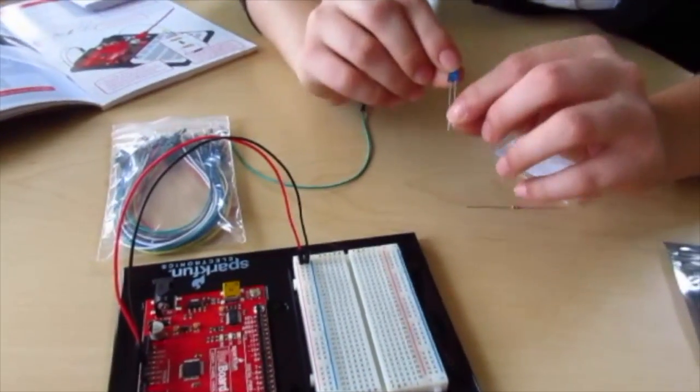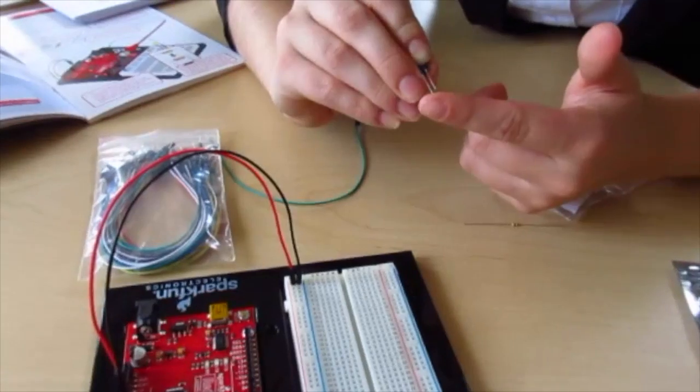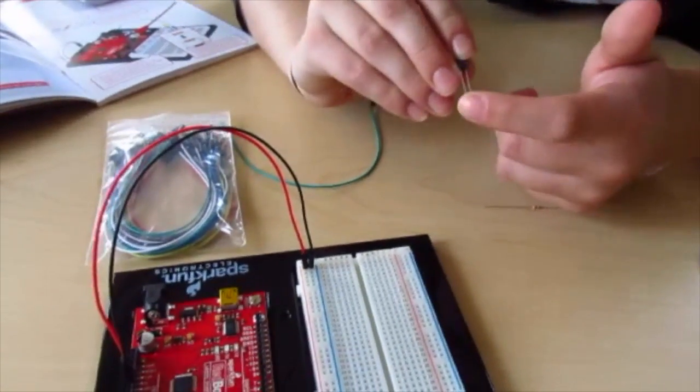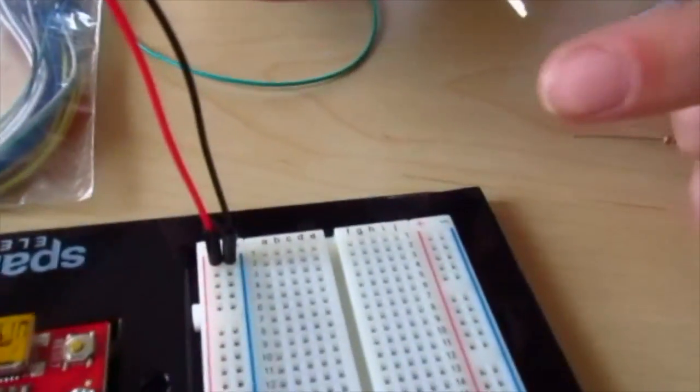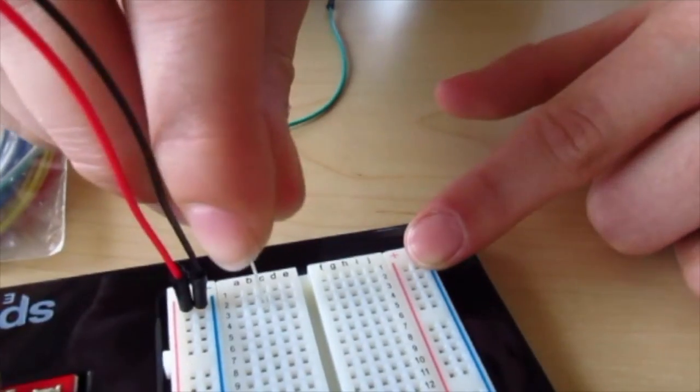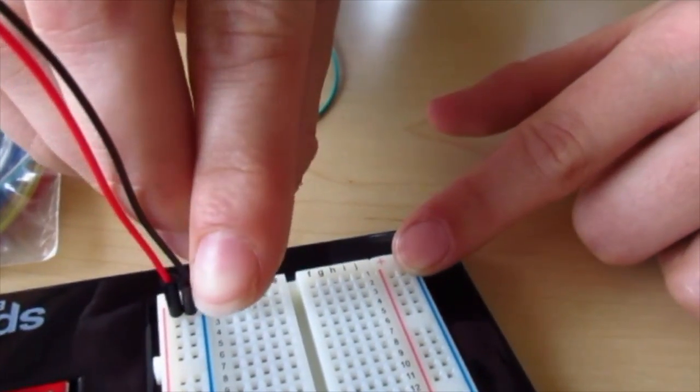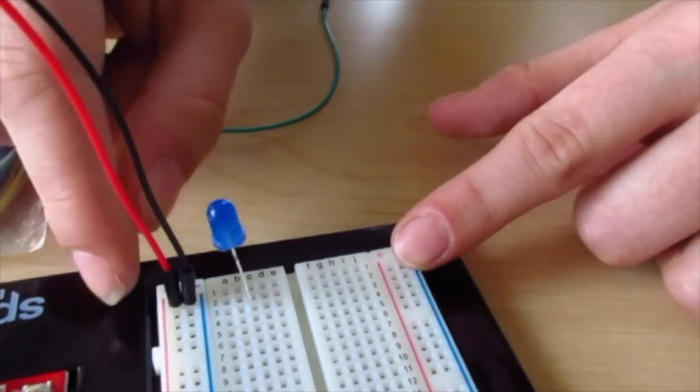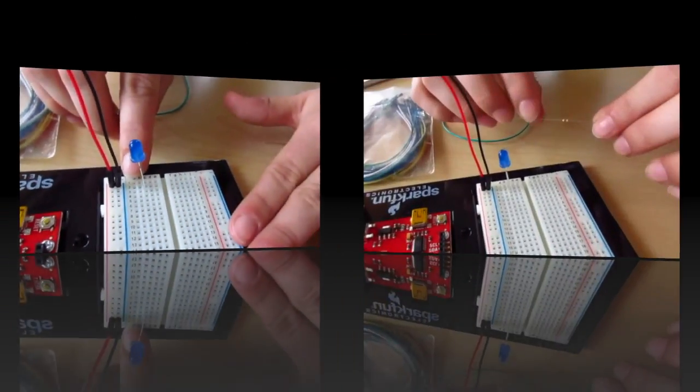Now we're going to place the LED on the breadboard. Because it has the negative and positive side, it does matter which one goes where. According to the example, you're going to put your positive side, the longer end, in C2 and the negative end in C3. You may have to wiggle it a little to place it in. Do not force your wires or your LEDs or resistors or anything else in your breadboard.